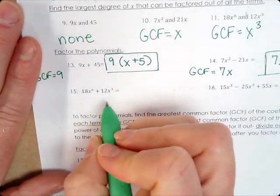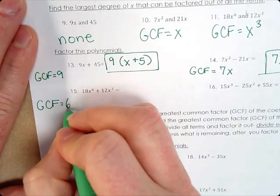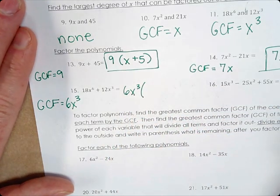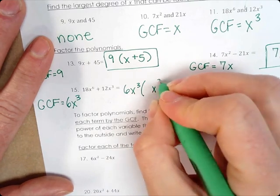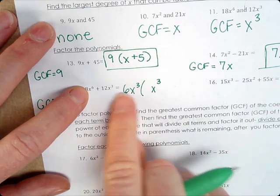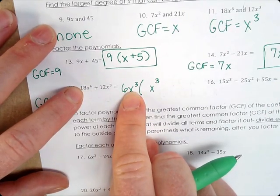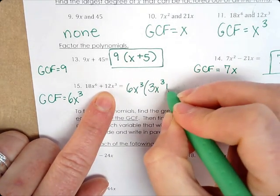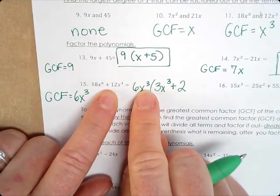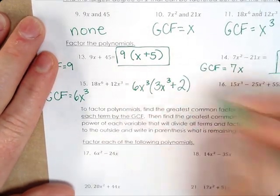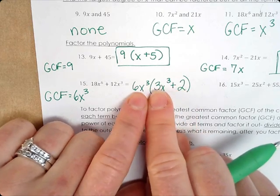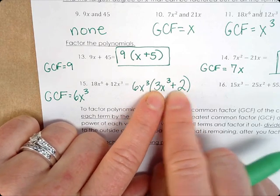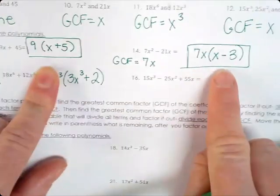The next one: 18x to the 6th and 12x to the 3rd. Our GCF is 6x cubed. So we factor out 6x cubed — 6x cubed times what gives 18x to the 6th? We need another x cubed, and the coefficient: 6 times 3 gives 18, so it's 3x cubed. For the next term, 6x cubed times 2 gives 12x cubed, so it's just 2. The result 3x cubed and 2 have nothing in common. For number 16 with three terms, the GCF is 5x, giving three terms inside parentheses. 5x times 3x squared gives 15x cubed, and 5x times 11 gives 55x — plus 11. The terms inside can't be factored further.